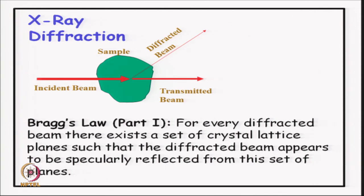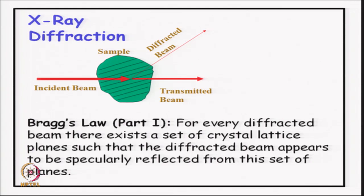The first part of Bragg's law states that for every diffracted beam, there exists a set of crystal lattice planes such that the diffracted beam appears to be specularly reflected — reflected like a mirror. So although atoms are interacting with the incoming X-ray and creating a diffracted beam, the end result can be interpreted, according to Bragg, as a reflection from a crystal lattice plane. Looking at the diffracted beam as a reflection from a crystal lattice plane was the first important step taken by Bragg — this is the famous Bragg's law.